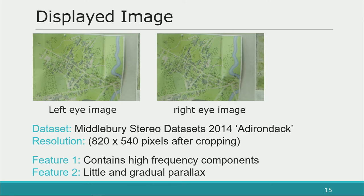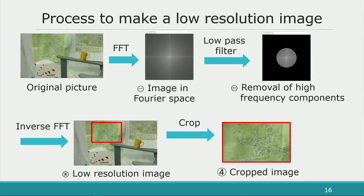I will now explain the image we used for our experiment. The image used in the experiment is obtained from the Middlebury stereo dataset. Since the purpose of this experiment was to compare resolution in detail, we used an image including a high-frequency component to a large extent, while the binocular parallax was small and gradual. We create low-resolution images by using Fourier transform. The procedure is as follows: first, we applied Fourier transform to the image; second, we masked the high-frequency components; third, we performed inverse Fourier transform to generate the low-resolution image. Finally, we cut out the part with small and gradual parallax to be presented in this experiment.